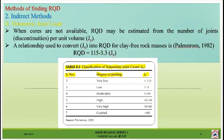The second indirect method is the volumetric joint count. When cores are not available, RQD may be estimated from the number of joints or discontinuities per unit volume, denoted Jv. The relationship used to convert Jv into RQD for clay-free rock masses is: RQD equals 115 minus 3.3 times Jv. If Jv is less than 1, the degree of jointing is very low; if Jv is greater than 60, the rock mass is classified as crushed.